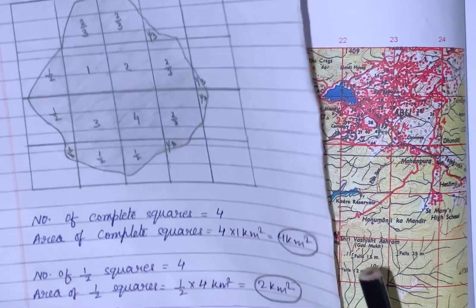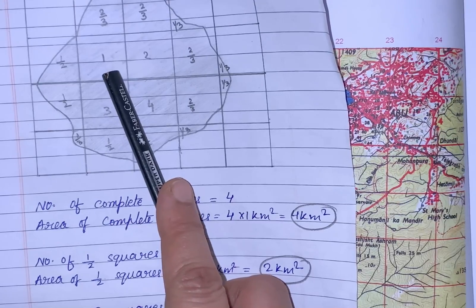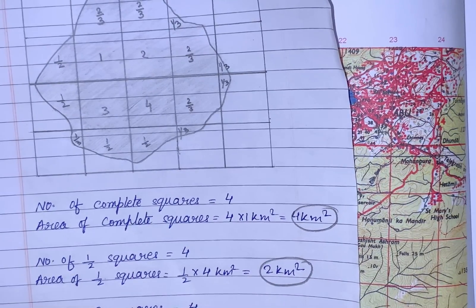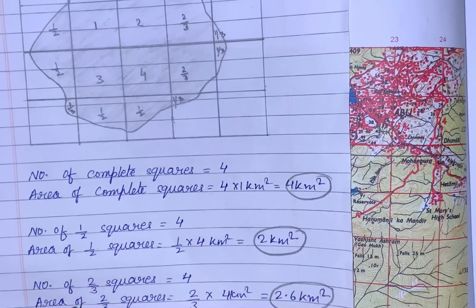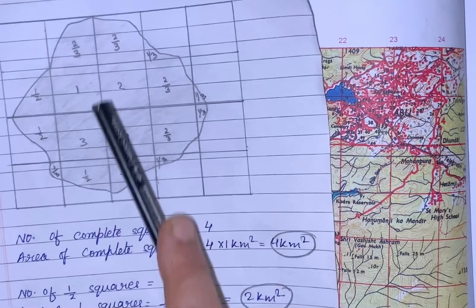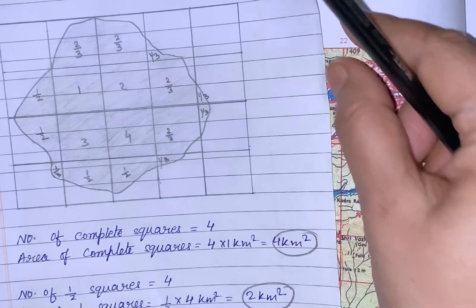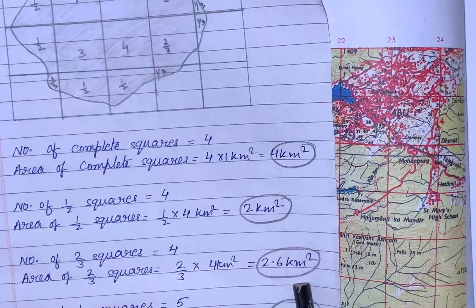Second, we will see the number of half squares: 1, 2, 3, and 4. Then the area of half squares will be two kilometers square. Third, we will count the number of two-thirds squares: again 1, 2, 3, and 4. Then the area of two-thirds squares will be 2.6 kilometers square.